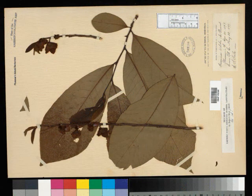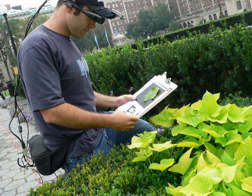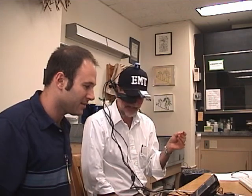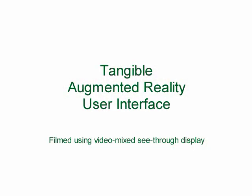With our colleagues, we are developing prototype user interfaces to an electronic field guide that uses computer vision to identify plants in a database and augmented reality user interfaces to inspect and compare virtual vouchers with newly collected specimens. The Tangible Augmented Reality user interface uses physical fiducials coupled with augmented reality to directly manipulate the user interface and search results.